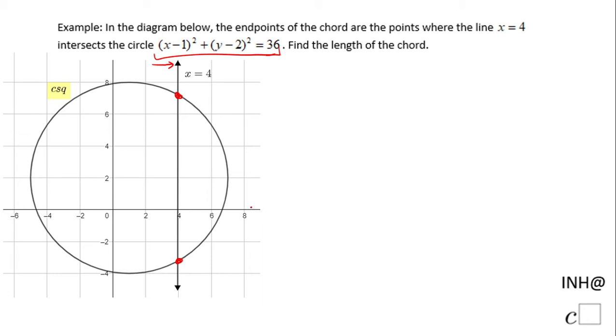First, I'll take the equation of the circle, (x-1)² + (y-2)² = 36, and find the center and radius. For that, I'm going to use the standard form: (x-h)² + (y-k)² = r².